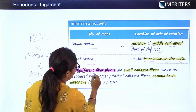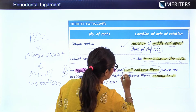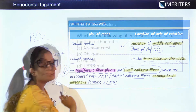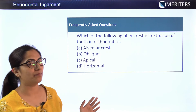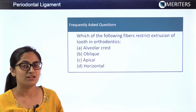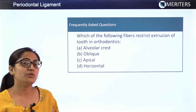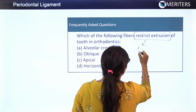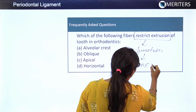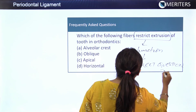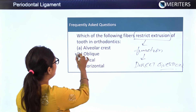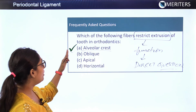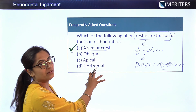The indifferent fiber plexus is made up of small collagen fibers associated with large principal collagen fibers, running in all directions. Now for frequently asked exam questions: one common question is which fibers restrict extrusion of the tooth. The answer is the alveolar crest fibers, as preventing extrusion is their primary function. If you know the function of each and every fiber, all related questions will be solved.